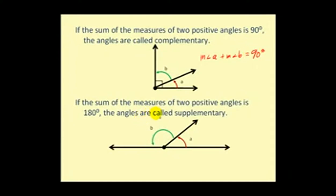Now if the sum of the measures of two positive angles is 180 degrees, the angles are called supplementary. So in this case we would have the measure of angle A plus the measure of angle B equals 180 degrees.